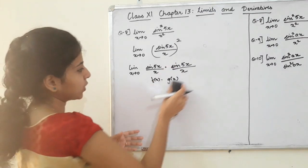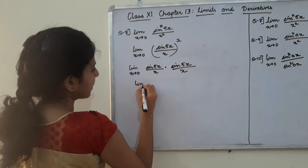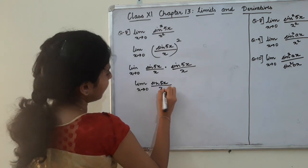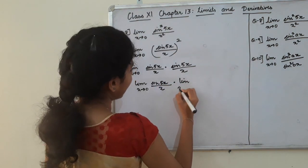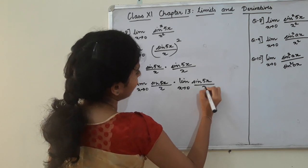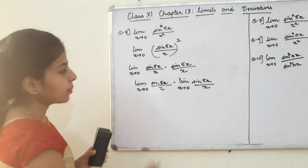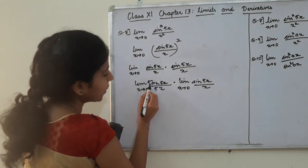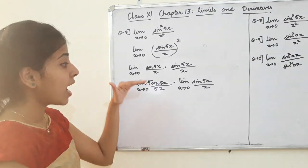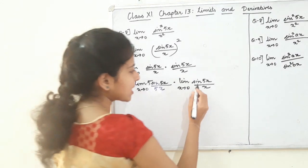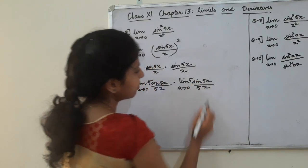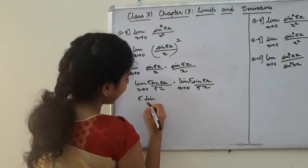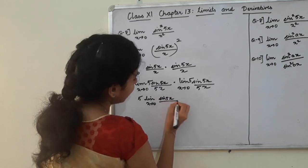Limit x taking to 0, sin 5x divided by x into limit x taking to 0, sin 5x divided by x. Now we have 5. We have to introduce a 5, so if we have 5, multiply it. We do that 5 divide it. This thing is 5. Our decision: limit x tending to 0, sin 5x divided by 5x.